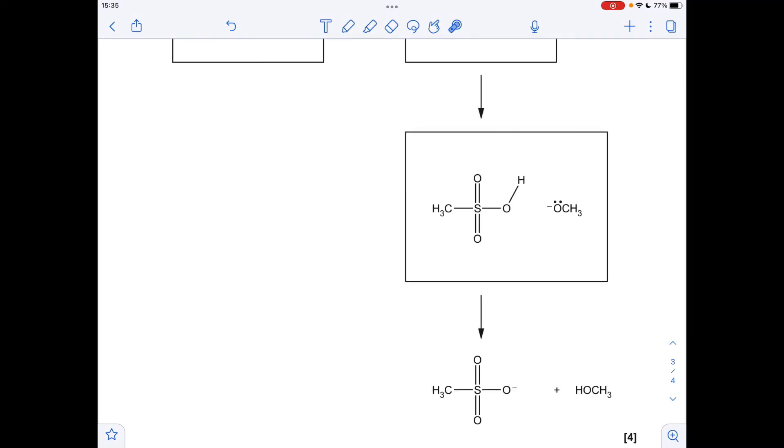And then finally, what's happened going from here to here? Well, this H has gone on to there, so how will that have happened? This pair of electrons have gone that way to grab that hydrogen, and this is now an O minus, so a pair of electrons. This bond's broken, and the pair of electrons has gone that way.